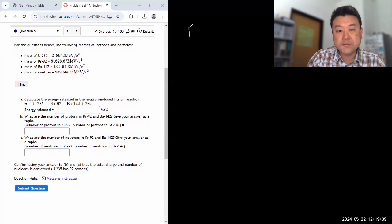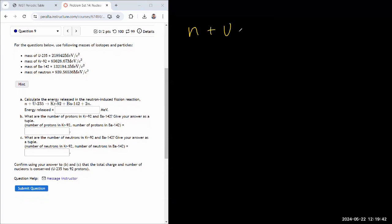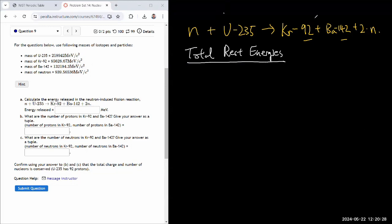But it specifies that you had a neutron and uranium-235 coming in. Those are the reactants, and the products, using the language in chemistry, or the daughter nuclei or products, are the krypton-92 plus barium-142. By the way, I'm pretty sure neither of these are super stable, plus 2 times neutron. So in terms of energy released, really all we have to do is calculate what are the total rest energies of the two sides, incoming, outgoing.